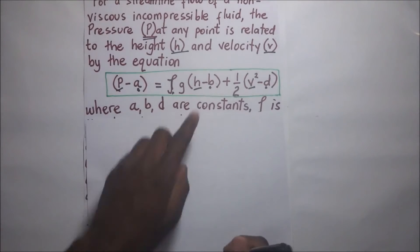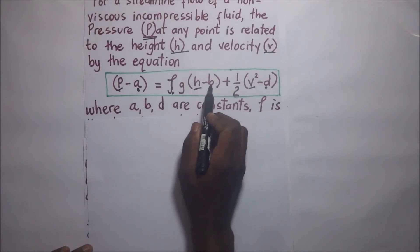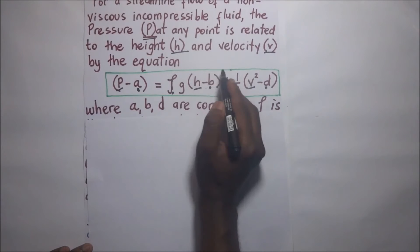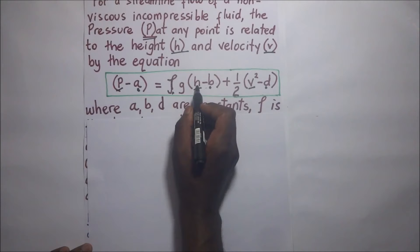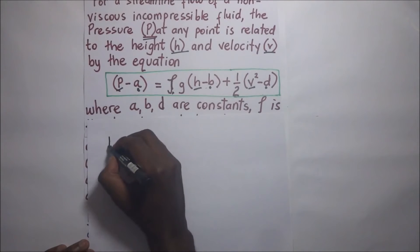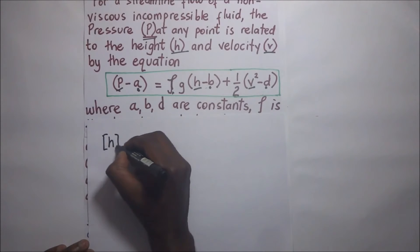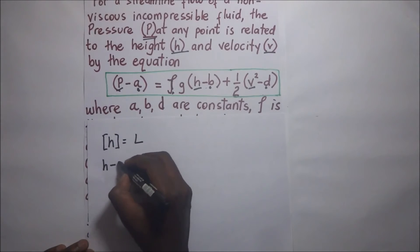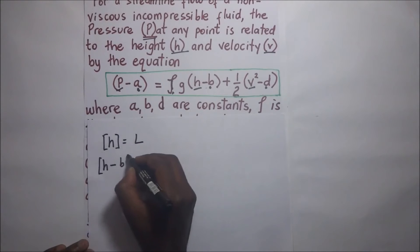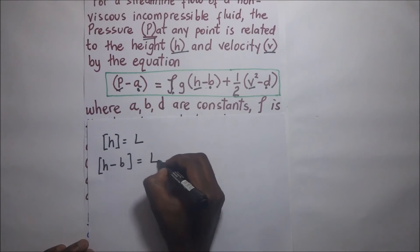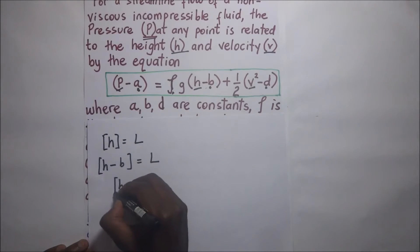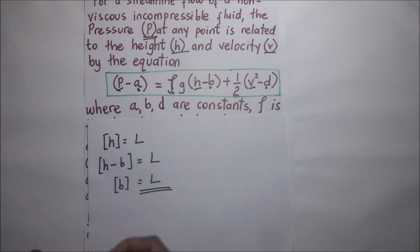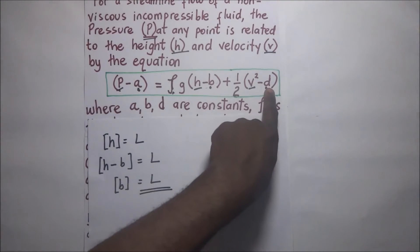To find the dimensions of B — since it is H minus B, H and B must have the same dimensions. Height H has dimensions of L. Therefore the dimensions of H minus B are L, and hence the dimensions of B are also L.